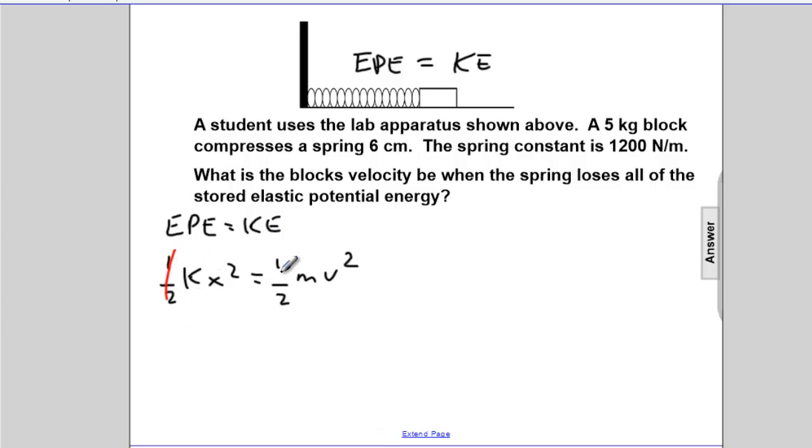We have some cancellation. One-half, we'll cancel one-half. And rewriting this, I'll place v on the other side. mv squared is kx squared. Dividing through by m on both sides, we'll be able to see that v squared is kx squared over m.